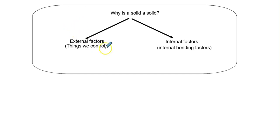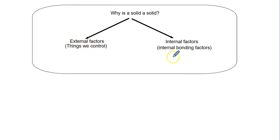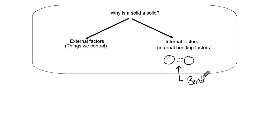So what makes a solid a solid? Not everything is a solid at all conditions. There are some things we can control about a solid — we call these external factors — and there are things we call internal factors, like what inherently causes one thing to bond to another, along the lines of bonding or intermolecular forces.